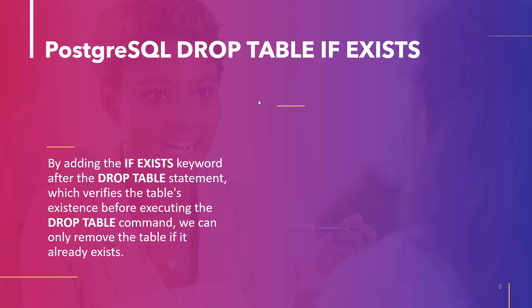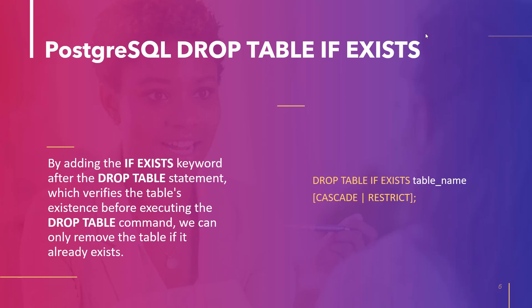The last topic of this tutorial is PostgreSQL Drop Table IF EXISTS. We can execute a Drop Table statement to remove a table only if it already exists by specifying the IF EXISTS keyword after Drop Table, which checks the table's existence before executing the drop statement. If no such table exists, PostgreSQL raises an error — so the IF EXISTS keyword is used to skip the drop statement in such a case.